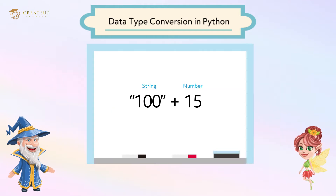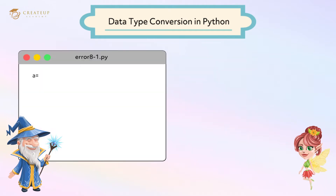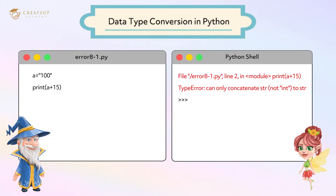First, let's try adding the string '100' to the integer 15. Create a new file in IDLE and write the code like this. Save and then run it. Then an error is displayed — it is not possible to calculate with a string and an integer. We need to convert the string to an integer before we can calculate it.